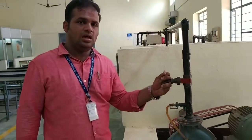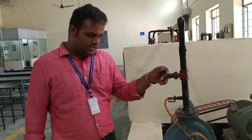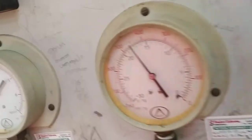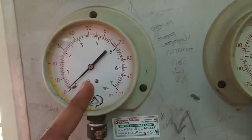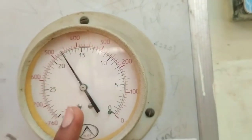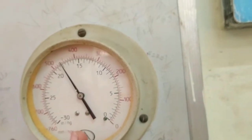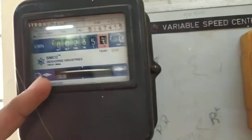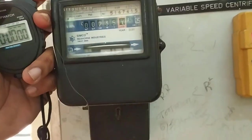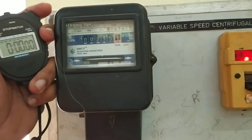Now adjusting the inlet valve and setting up the pressure to 1 kilogram force per centimeter square, and your vacuum pressure reading will be here around 450 millimeter of Hg. And we will calculate time taken for 10 revolutions of the energy meter.